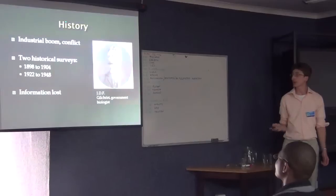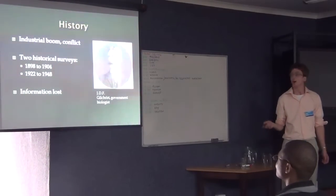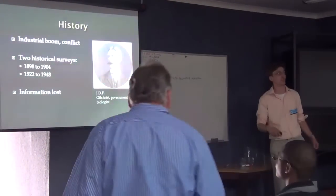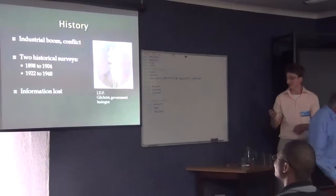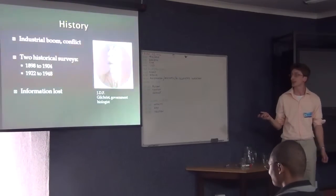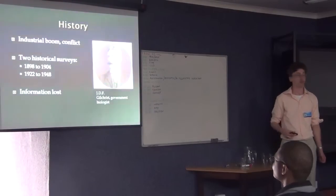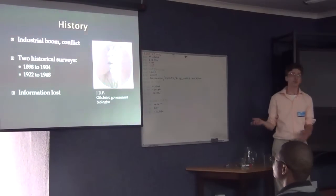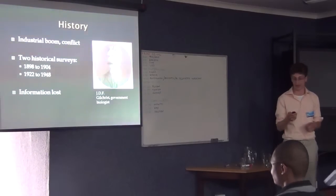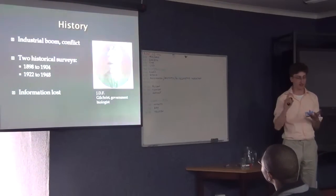So they looked to the trawl fisheries of both North America and England that were producing large quantities of fish rather cheaply. The results were two historical surveys, beginning 1898 to 1904, and that was using the Pieter Faure, a purpose-built trawler for research. Then after the World War and recession, they started again in 1922 and went into 1948. We knew these surveys had taken place, but the actual information had been lost in the archives until 2009 when they were recovered, digitized, updated, and corrected.